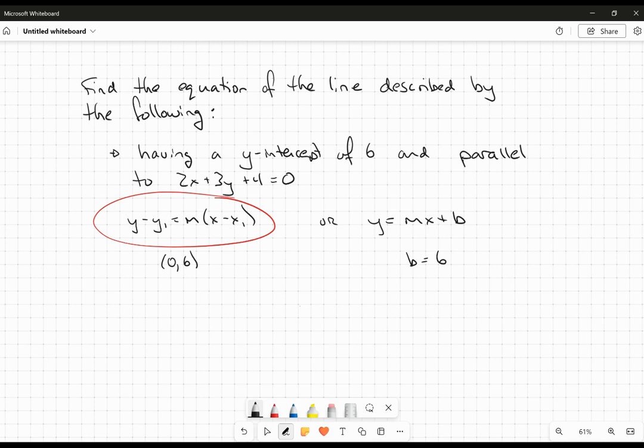Parallel to, remember, parallel to means same slope. So what I need to do is figure out what the slope is of this 2x plus 3y plus 4. And to do that, what I want to do here is convert this into slope-intercept form by isolating the y.